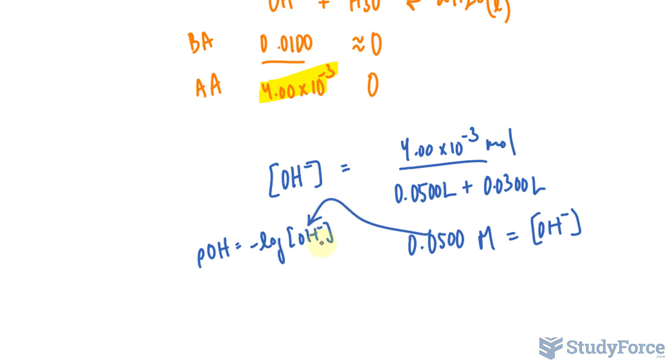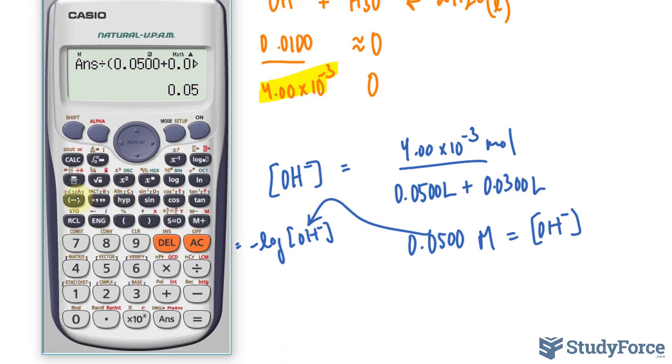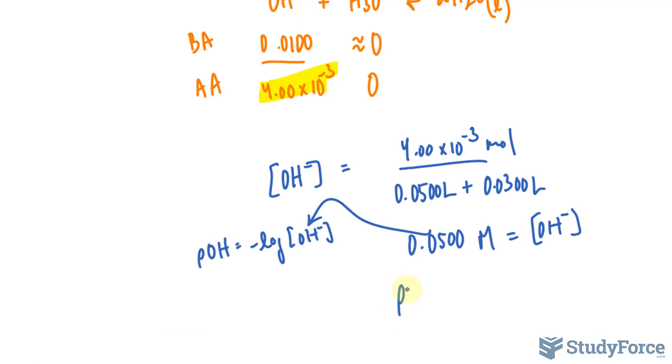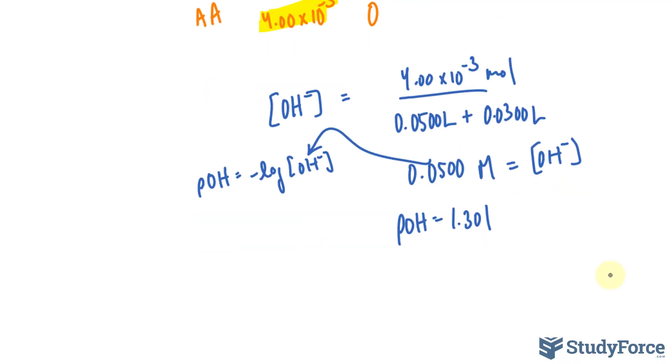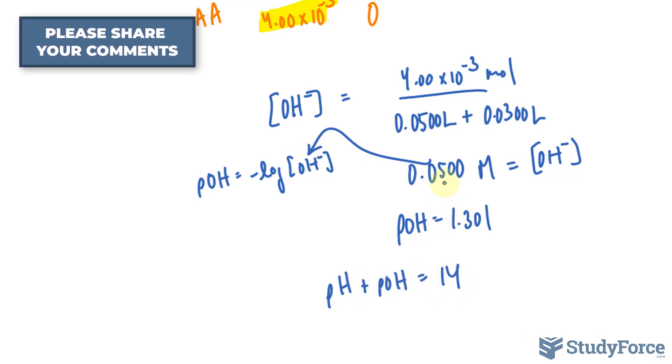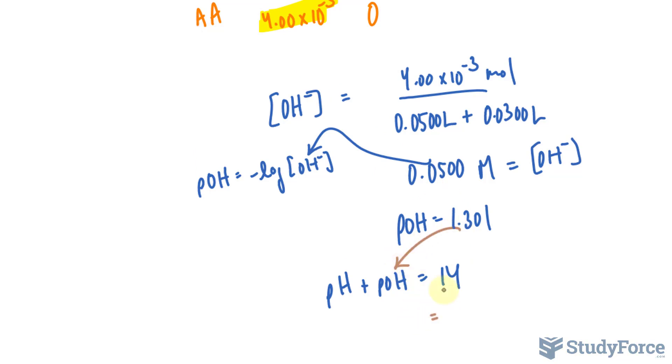I'm going to go ahead and substitute that right into there, so we have negative log of the previous output, we get pOH is equal to that number, and now using this formula, pH plus pOH is equal to 14, I'll substitute this into there, and rearrange for pH.